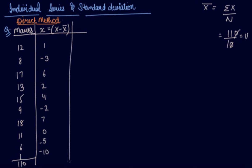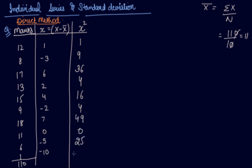After taking out the deviation, we take the square of each deviation. 1² = 1, 3² = 9, 6² = 36, 2² = 4, 4² = 16, 2² = 4, 7² = 49, 0² = 0, then 25 and 100. Adding all these, we get the summation of x² equal to 244.